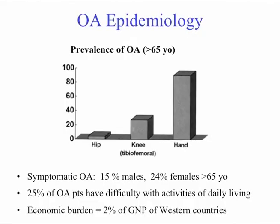This slide presents the epidemiology of osteoarthritis. Approximately 90% of humans greater than age 65 have hand osteoarthritic changes, about a third have knee osteoarthritis, and 5% have hip osteoarthritis based on radiographic surveys. In terms of actually having symptoms, about 15% of males and 25% of women over age 65 have symptomatic OA that affects quality of life, causing difficulties in activities of daily living. There is a tremendous economic burden, with up to 2% of GNP from industrialized nations lost as a result of osteoarthritis.